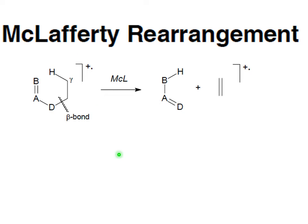Now there can be rearrangement in your molecule. When you have a combination of elements that can accept a hydrogen — it can be an aromatic carbon, it can be oxygen, it can be nitrogen — and you have a gamma hydrogen (a six-membered ring transition state), you may have cleavage here with hydrogen synchronously jumping in this direction. What is left is a double-bonded compound.